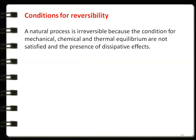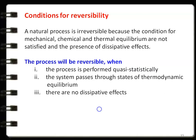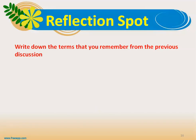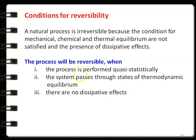For a process to be reversible, three conditions must be satisfied. First, the process must be performed quasi-statically — very, very slowly. Second, the system must pass through states of thermodynamic equilibrium throughout the process. Third, there must be no dissipative effects. When these three conditions are satisfied, the process will be reversible.